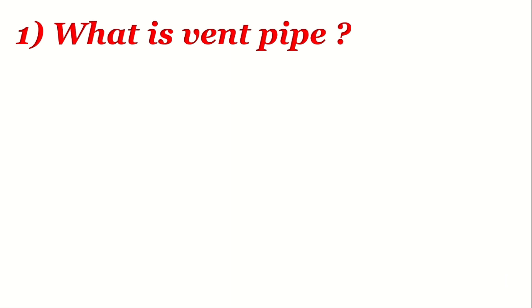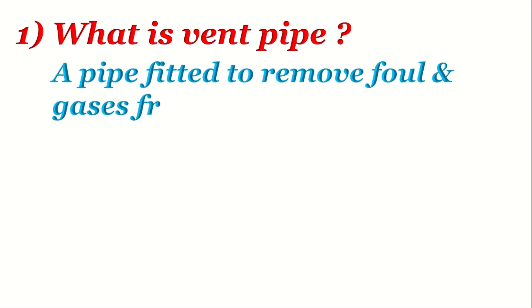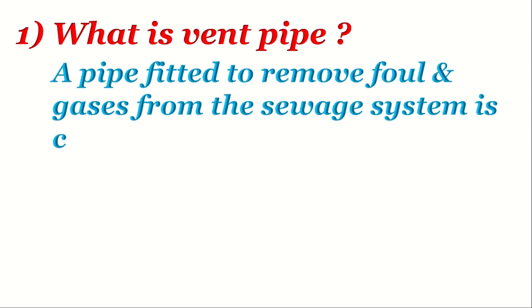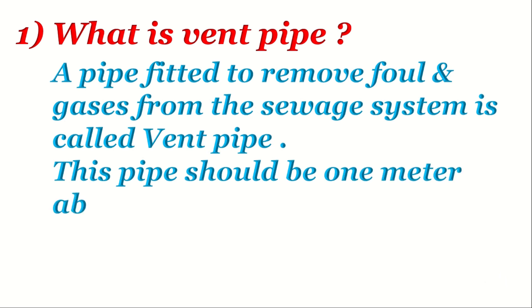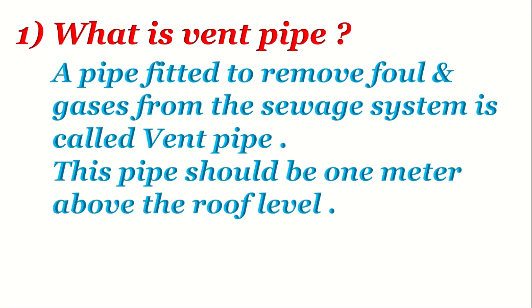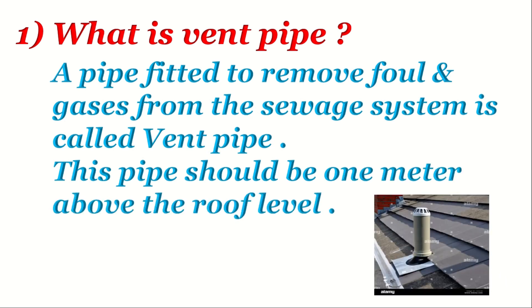What is a vent pipe? A pipe fitted to remove foul end gases from the sewage system is called a vent pipe. This pipe should be one meter above the roof level.